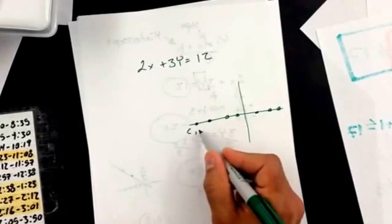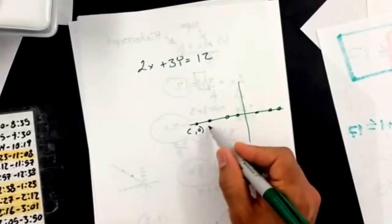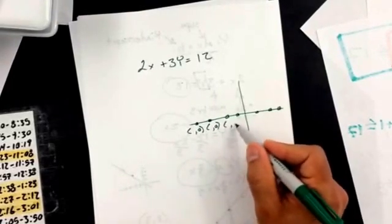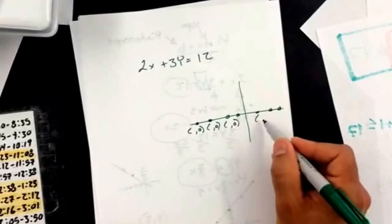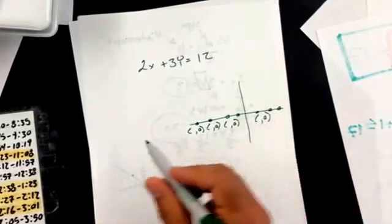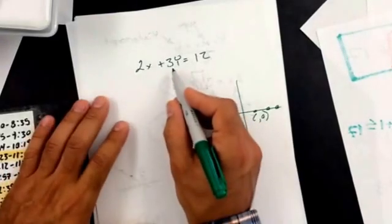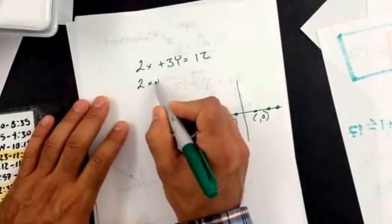So I don't know what this point is, but I know it's something comma 0. This one, same thing, something comma 0. I know that at every single one of these x intercepts, y is 0. So that means if I'm trying to solve for the x intercept, I can plug in 0 for y.